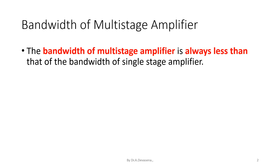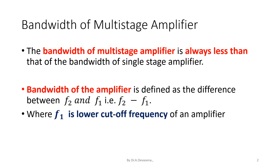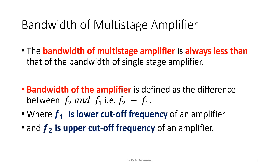The bandwidth of multistage amplifier is always less than that of the bandwidth of single stage amplifier. Before going to see about the derivation, let us see the definition of the bandwidth. Bandwidth of the amplifier is defined as the difference between F2 and F1, that is F2 minus F1, where F1 is the lower cutoff frequency and F2 is the upper cutoff frequency of an amplifier.